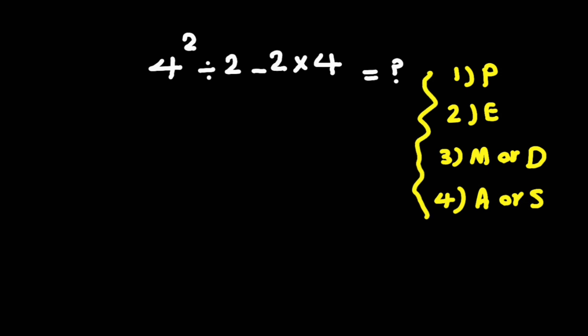We have one division here, one multiplication here, and one exponent here that we have to solve first. So we can start with this exponent: 4 to the power of 2 gives us 16.